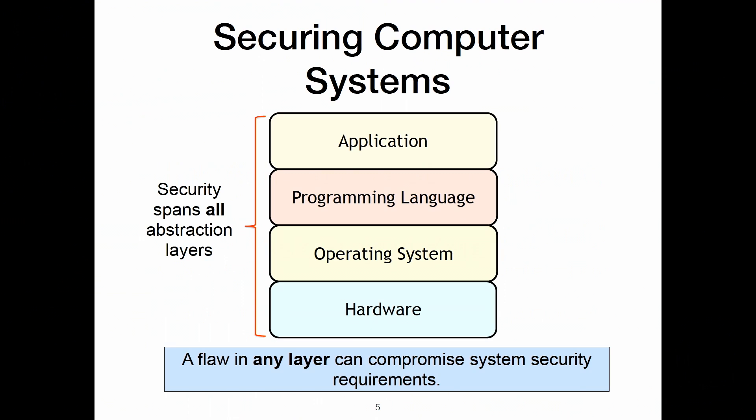Securing computer systems is complicated because security spans all the layers in your system — the hardware, operating systems, programming languages, applications, all of the layers in your system. A flaw in any layer can compromise your system's security requirements. And flaws in lower layers are even more serious.